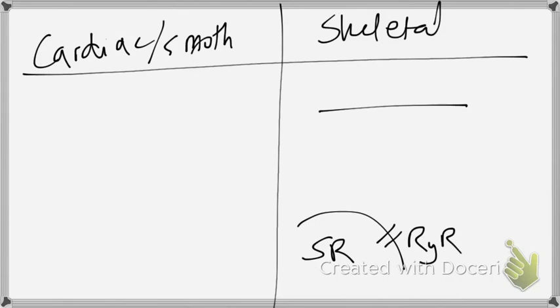So what happens here is, there is a receptor that we will call calcium channel L-type because this is the one which is blocked by calcium, verapamil.